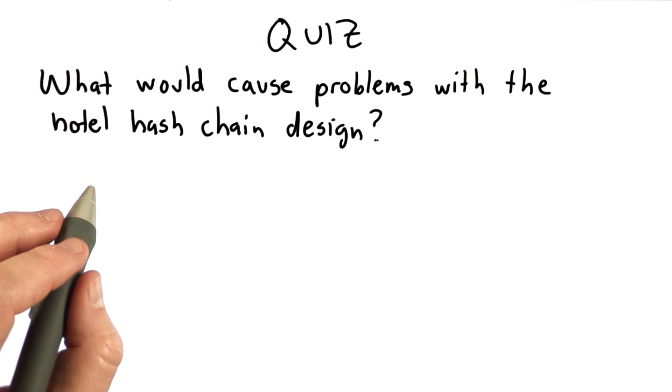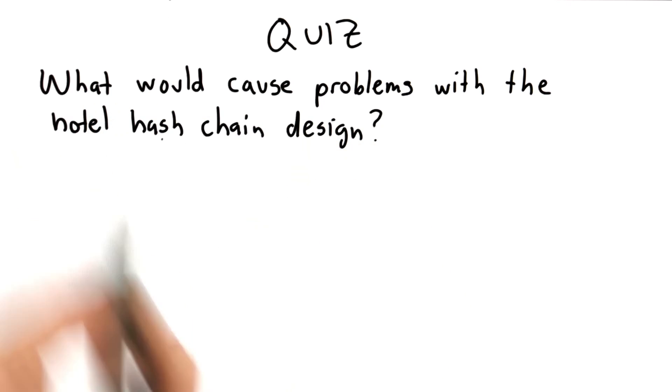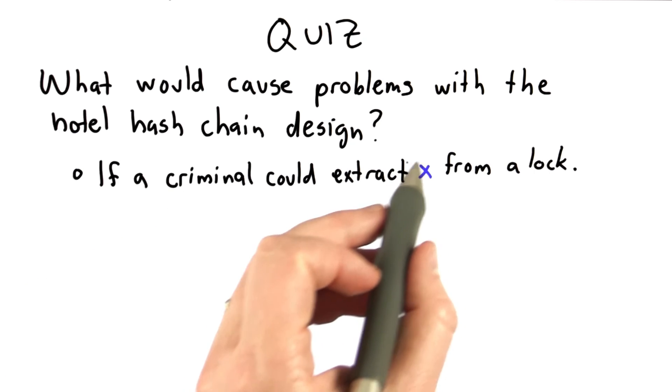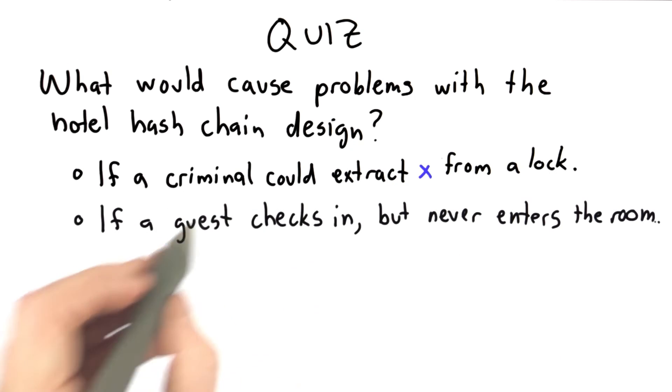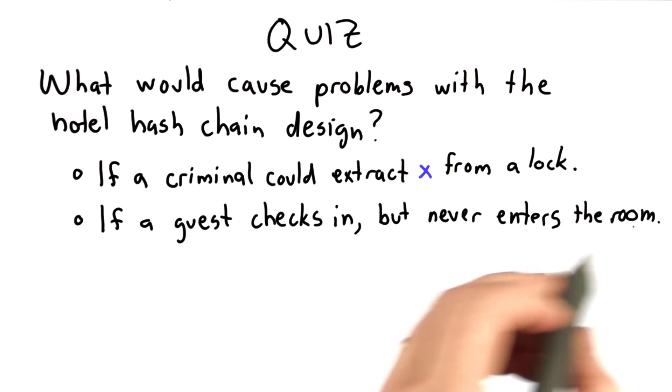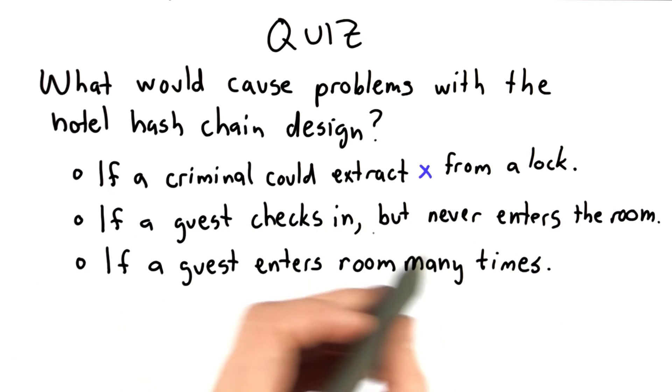So to see that you understand it and understand hash chains well, we have a quiz. What would cause problems with this design? If a criminal could extract the stored value from the lock, if a guest checks into the hotel but never actually enters her room, or if a guest enters the room many times.